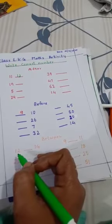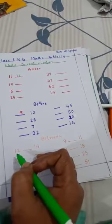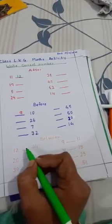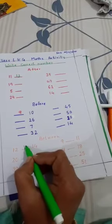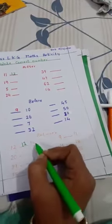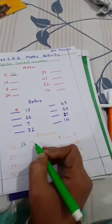To hum log yahan se forward counting karenge. 12 ko baad kya hota hai? 12 se start karo. 1, 2, 12. 1, 3, 13. 1, 4, 14. Aa gaya.